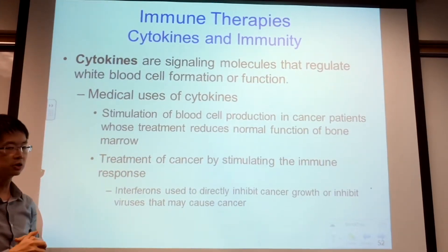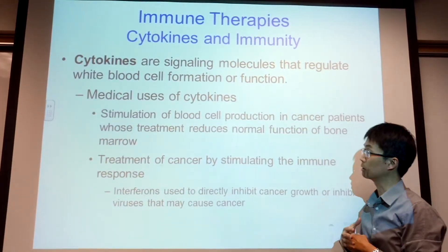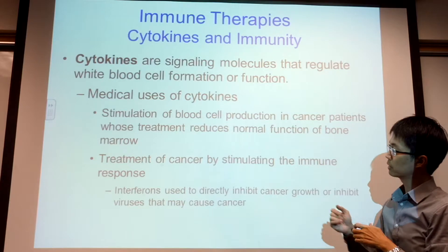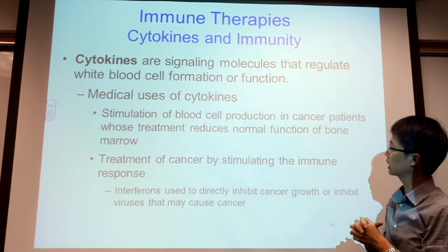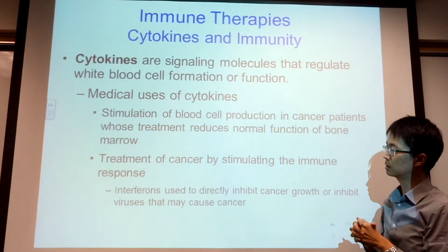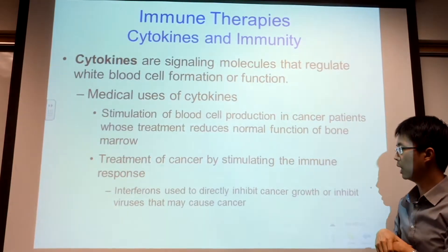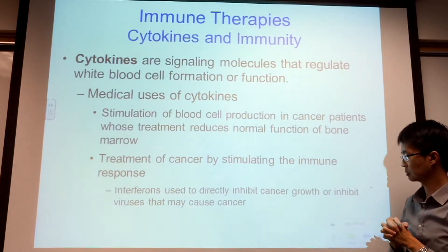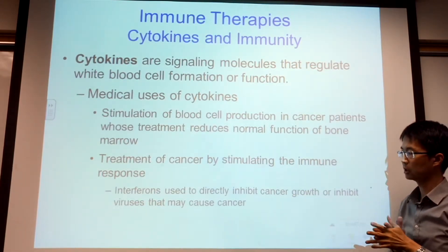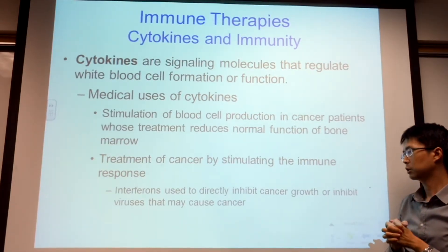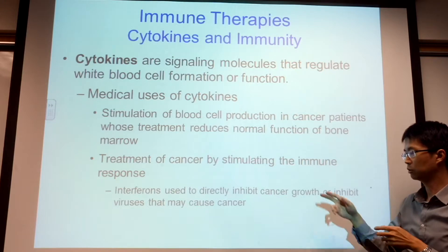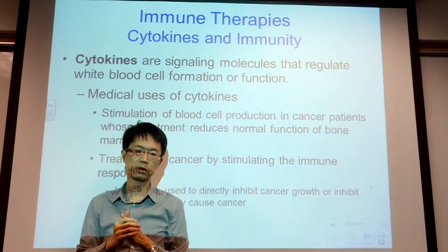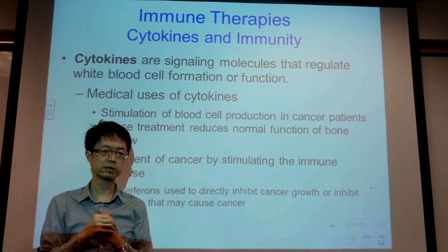Cytokines are cell-to-cell signaling molecules. We can use cytokines to stimulate red blood cell production in cancer patients, affect the bone marrow, or help treat cancer by signaling the immune response. Interferons are a form of cytokine that can tell the immune system to fight or inhibit cancer growth, or inhibit viruses that cause cancer — such as HPV, the virus that causes cervical cancer.